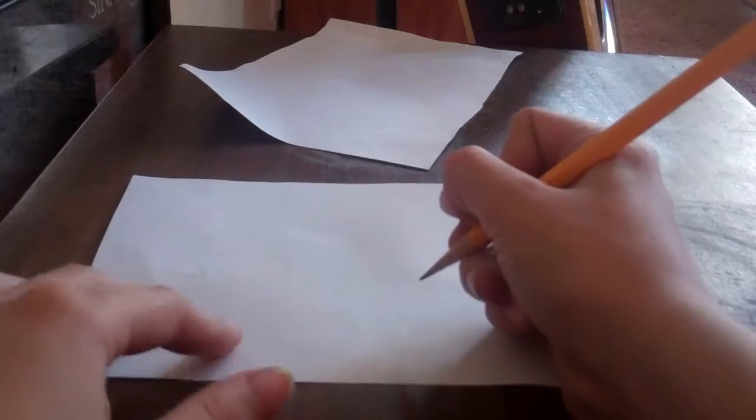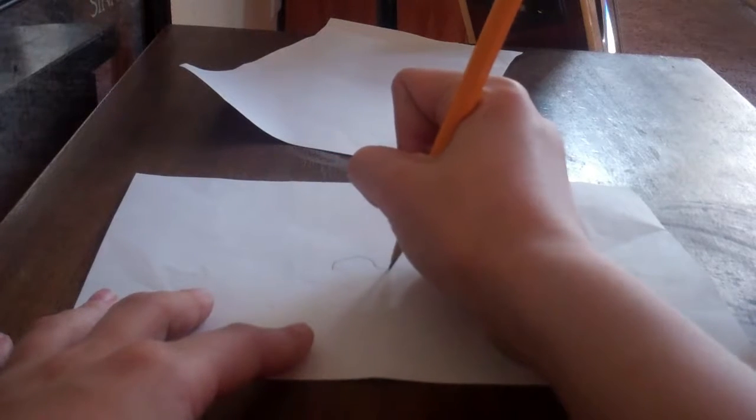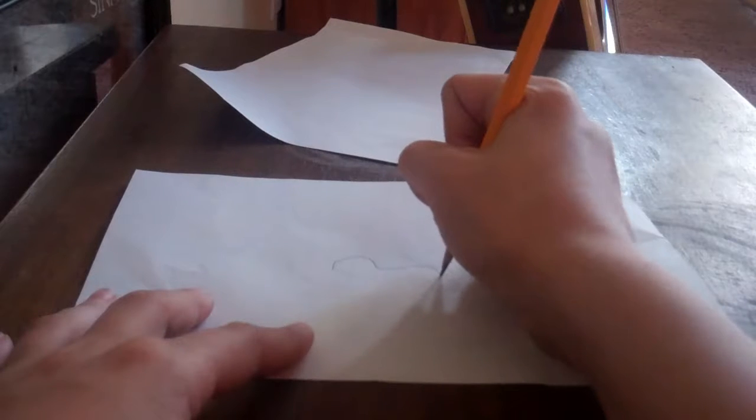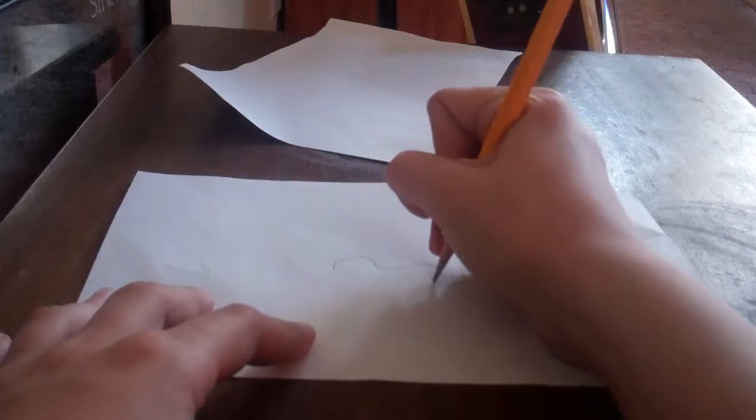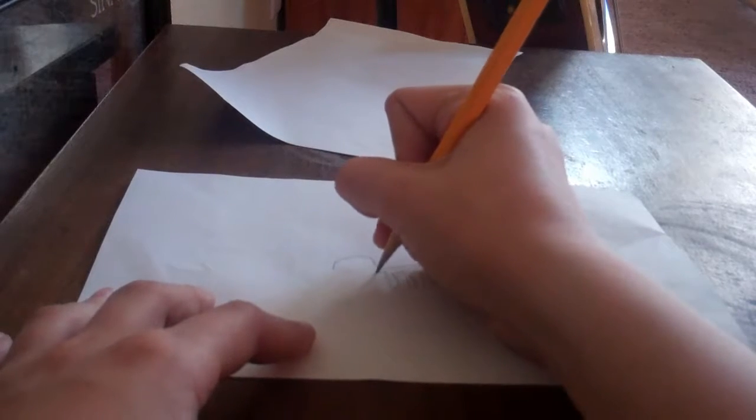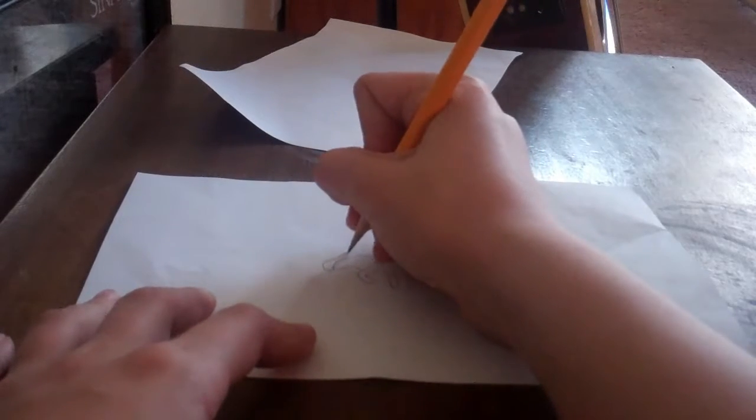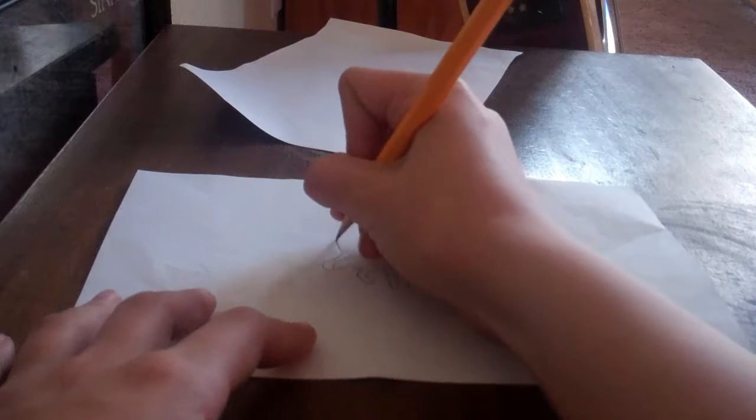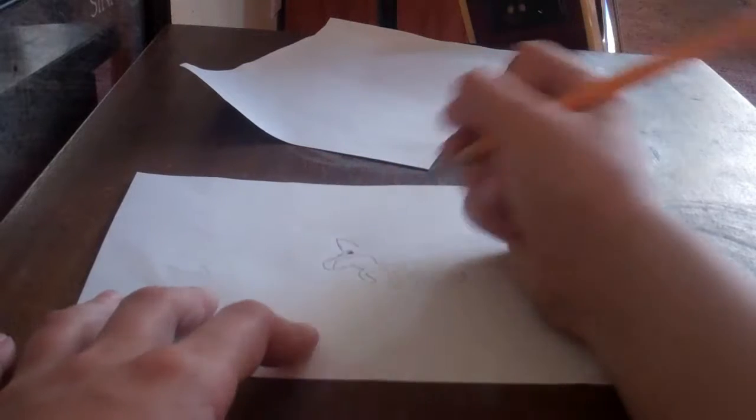And I think first I'm going to draw a unicorn. Let's see what I can do. Okay, I'm ready to start drawing. First I'm going to do the head and the body right there. There's a tail. Okay, one leg, two leg, three leg, and four leg right there.